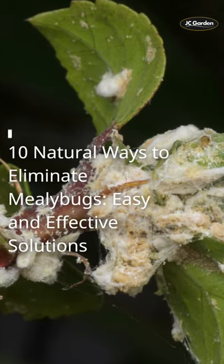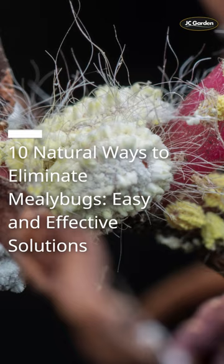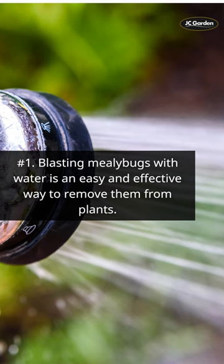10 Natural Ways to Eliminate Mealybugs: Easy and Effective Solutions. Number 1: Blasting mealybugs with water is an easy and effective way to remove them from plants.